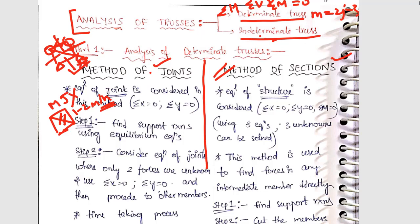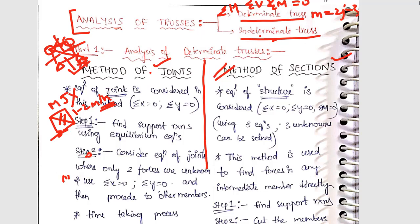In method of sections, we cut the structure and analyze either the left side part or the right side part. By doing this we save a lot of time and can get the force in that member instantly. We will do lots of examples and you will be perfect at it — there is nothing much in this chapter.